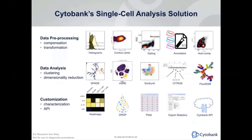Before we jump to Citrus, I'd like to introduce some of the key functionalities in Cytobank. We have a whole suite of data analysis tools. We see data analysis as a pipeline workflow. The first step will be data pre-processing, which includes compensation, scale transformation, and pre-gating to get clean quality data for downstream analysis. After that, you can use clustering tools or dimension reduction tools like viSNE, FlowSOM, SPADE, and Citrus. You can leverage cloud computing power to run multiple analyses simultaneously and free up your local computer.